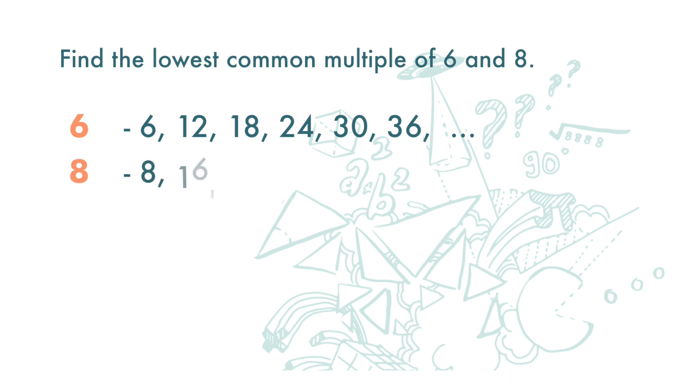We can see from the list that the first common multiple is 24, and this will be the lowest of all the common multiples. The lowest common multiple (LCM) of 6 and 8 is 24.